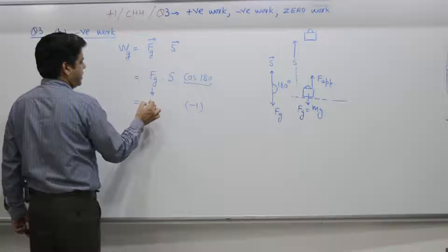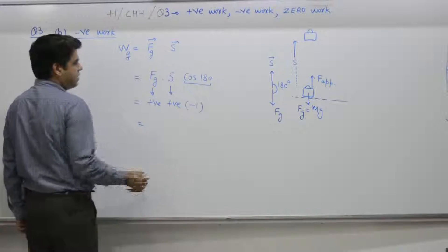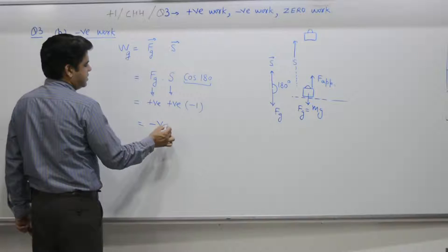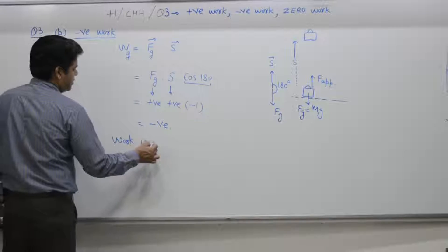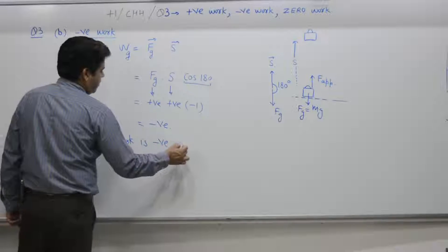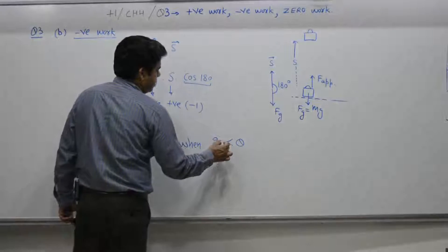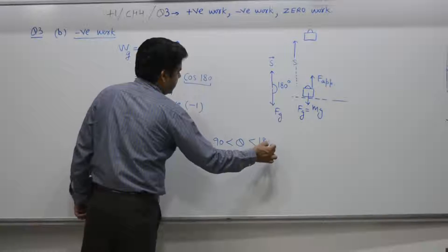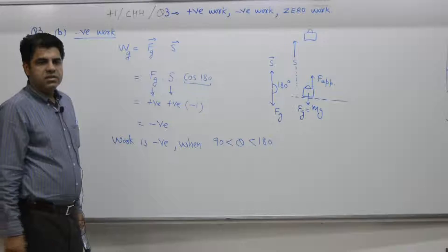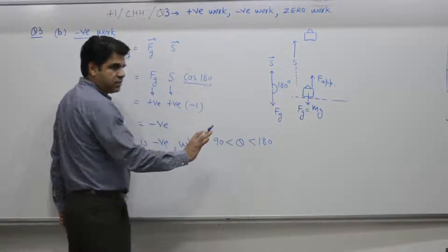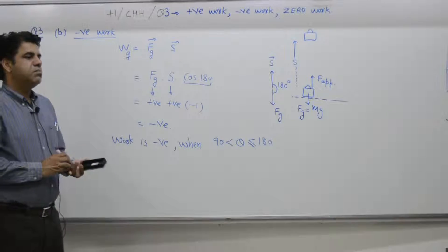The magnitudes are positive because they are magnitudes, but cos 180 is negative — so work is negative. Work is negative when theta lies between 90 and 180 degrees. If theta is equal to 90, cos 90 is zero, so equal to 90 is not included. But when theta is equal to 180, cos 180 is minus 1.